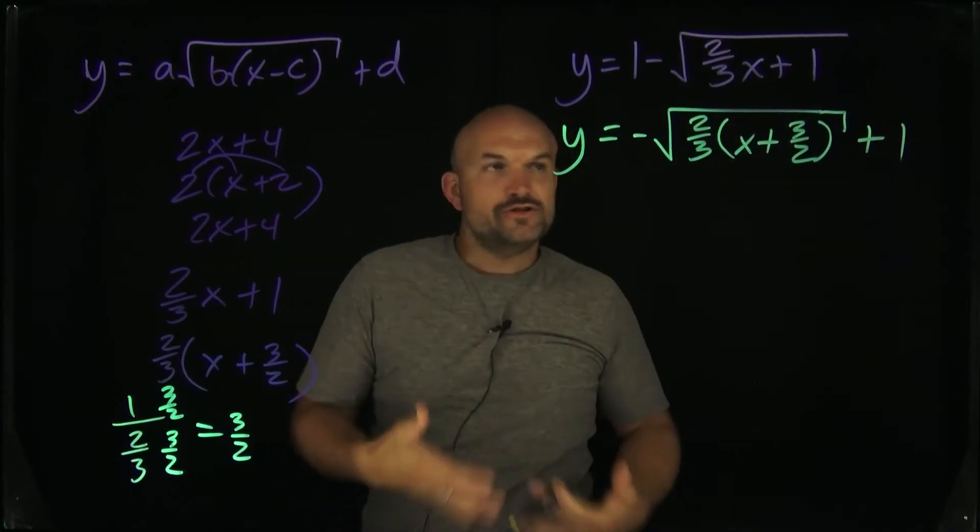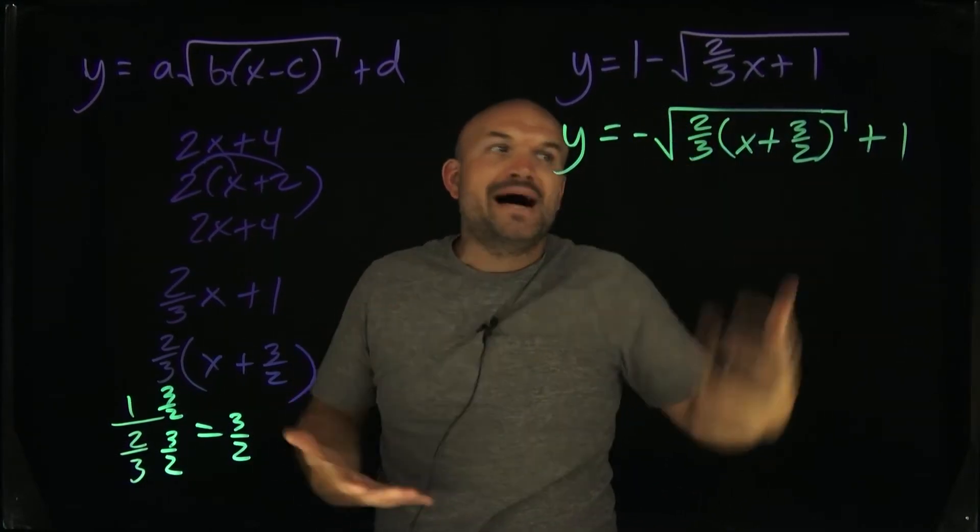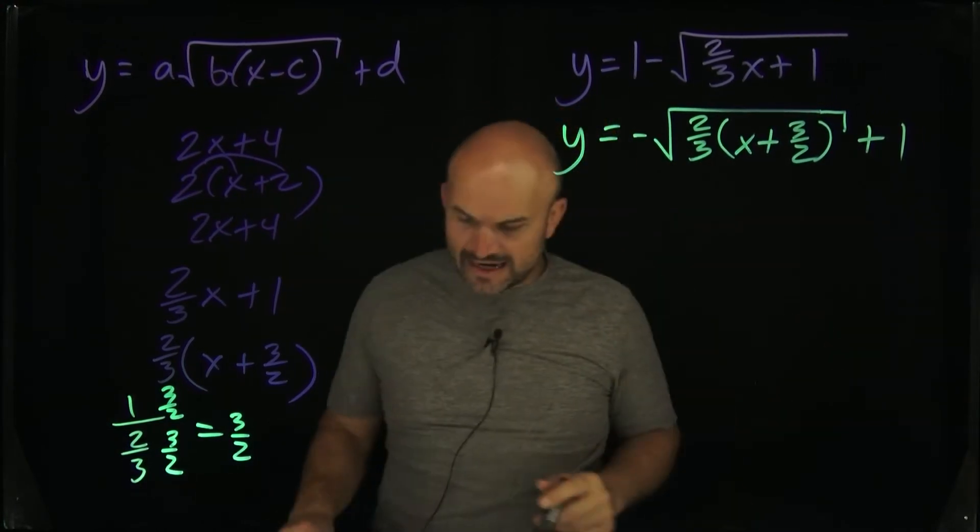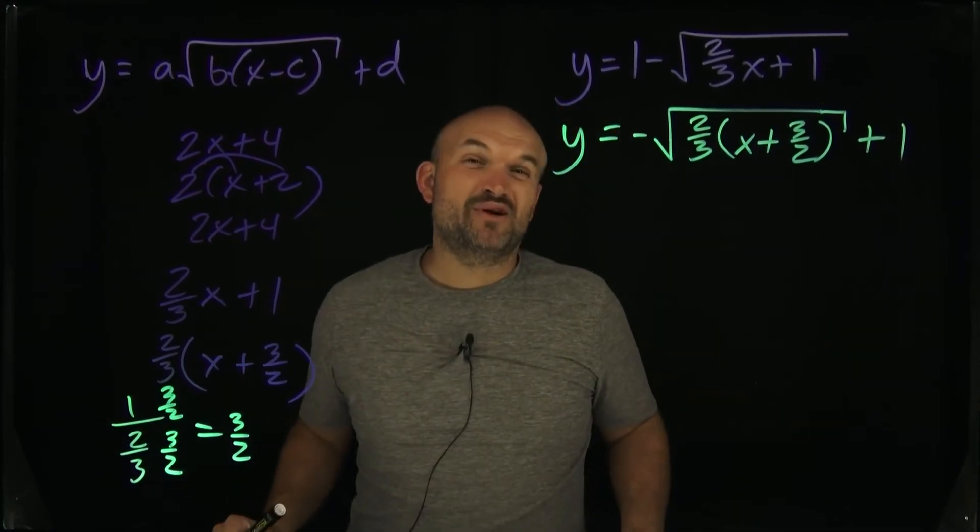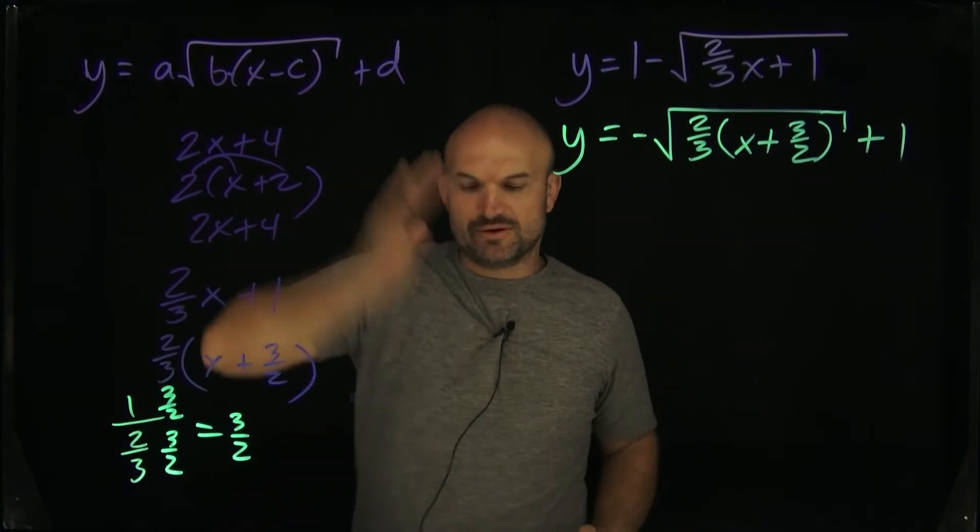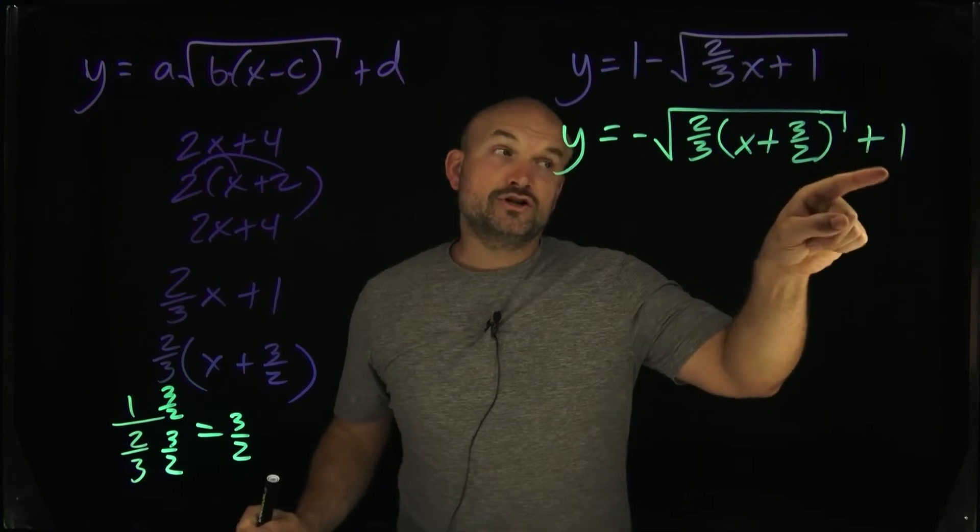But therefore, if there's nothing in front of it, we can assume or presume that is going to be a positive. Because obviously, if it had a negative in front of it, it would be represented as a negative. So now what I want you to see here is we have a lot of operations. We have a reflection on the outside. So therefore, if it's a vertical reflection, that's going to be a reflection about the x-axis. We have a vertical shift up one.